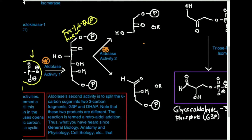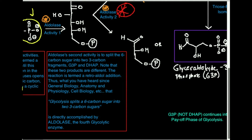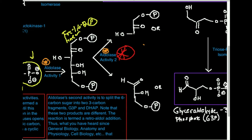The second activity is cleavage of the six-carbon fragment. This is the step where you break the six-carbon sugar into two three-carbon fragments. Aldolase's second activity is to split the six-carbon sugar into two three-carbon fragments termed G3P and DHAP. G3P stands for glyceraldehyde-3-phosphate; DHAP stands for dihydroxyacetone phosphate. Note that these two products are different. The reaction is termed a retroaldol addition. This is directly accomplished by aldolase — this is the enzyme that does what you've heard about even since high school.